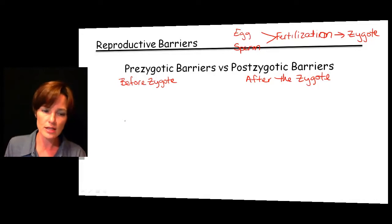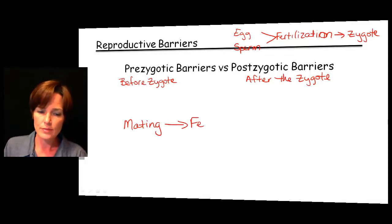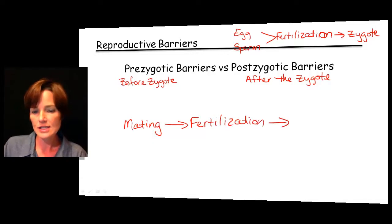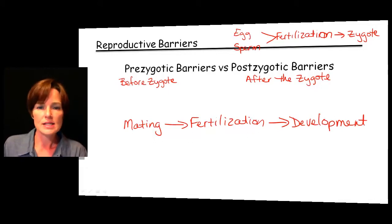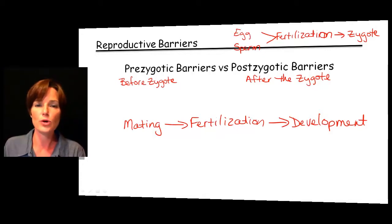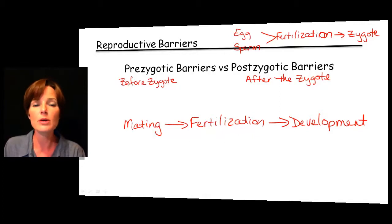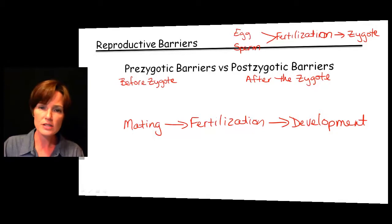To say it a little plainer: we have mating, then we have fertilization, and then the next step is development of the zygote. If we disrupt this process anywhere along the way, it works against those species breeding with each other and producing viable offspring. Let's first take a look at what we call the prezygotic barriers.